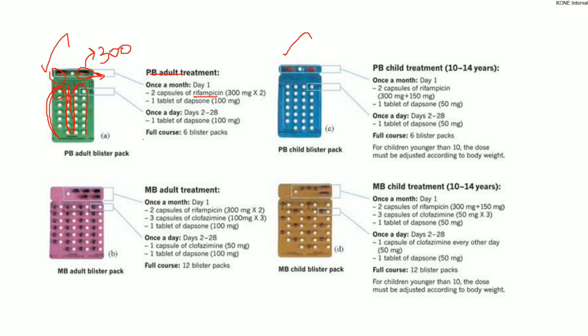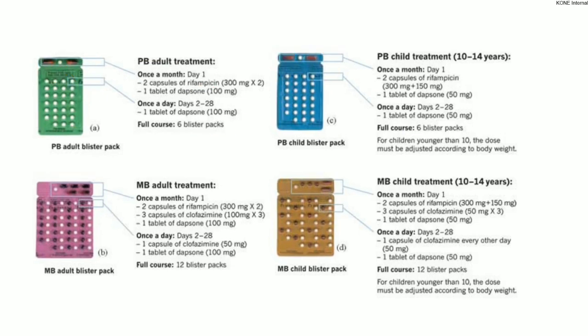So in the first course, we are going to give 6 blister packs to the patients. For the pediatric group, on Day 1 we give Rifampicin at 450 mg — one 300 mg capsule plus one 150 mg capsule — and Dapsone at 50 mg. From Day 2, they continue with Dapsone 50 mg daily for 28 days, completing 6 blister packs. Paucibacillary blister packs are available in green as well as blue color.